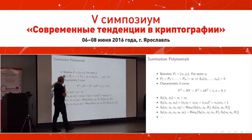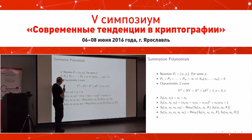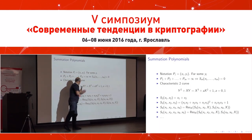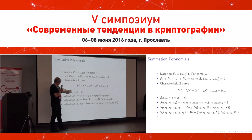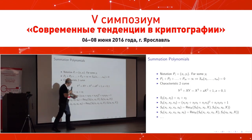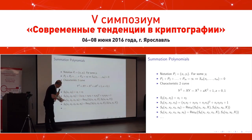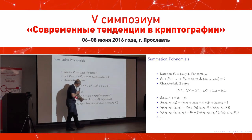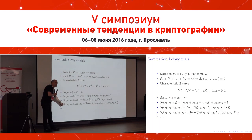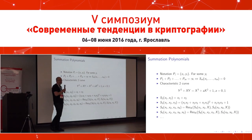That is the definition of the summation polynomial introduced in my 2004 work. As an example, for a characteristic 2 curve, the summation polynomial S2 is simply x1 + x2. S3 is slightly more complicated but still quite easy. S4 is constructed using a resultant and is much more complicated. S5 is even more so, and S6 is terribly complicated.